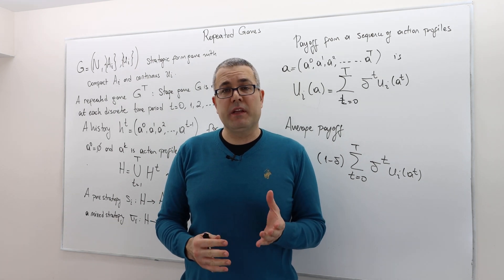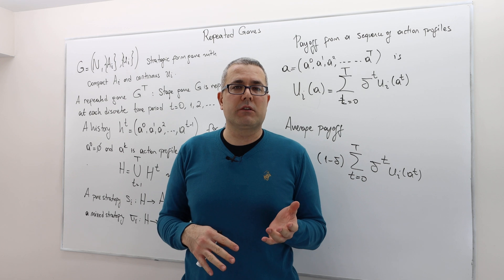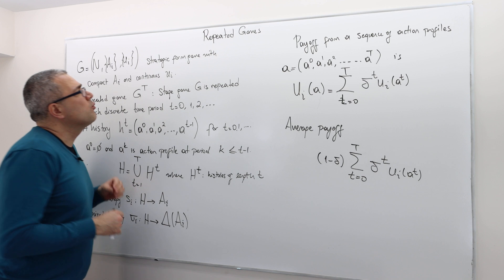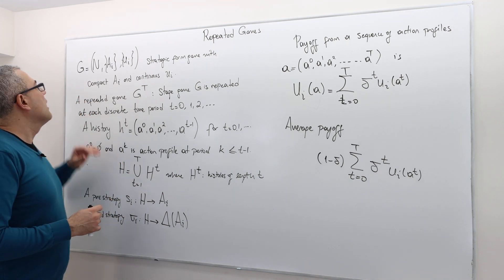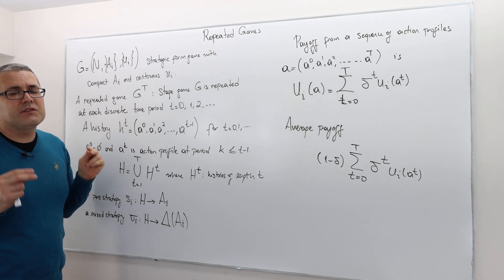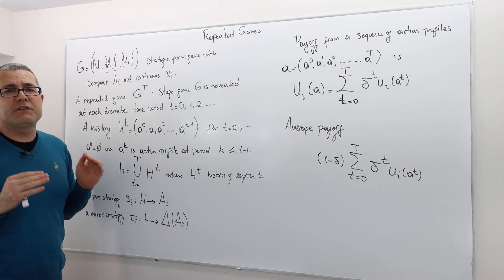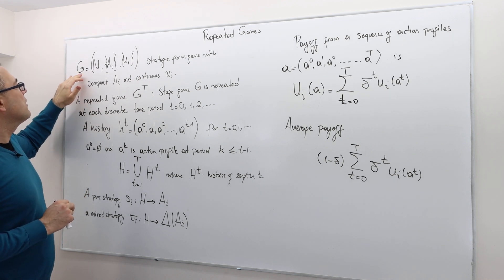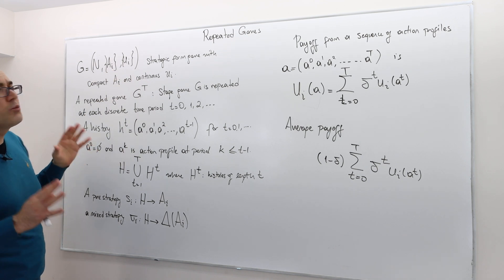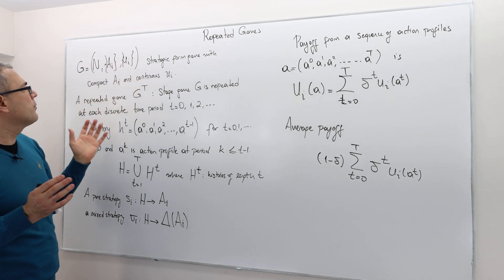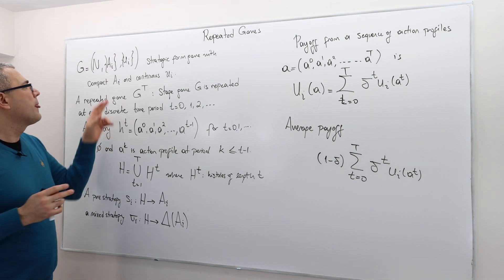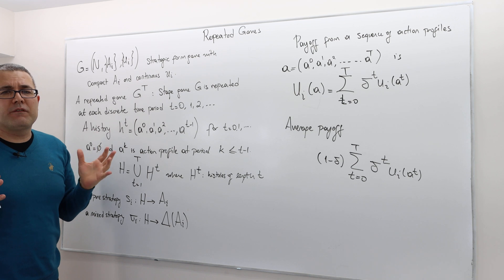Let's talk about repeated games, finite or infinite horizon. The initial ingredient is what we call a stage game. A stage game is any strategic form game G, with a set of players, set of actions for each player, and set of payoffs. We assume that the strategic form game has a compact set of strategies or actions for each player and a continuous payoff function.